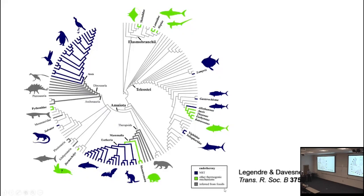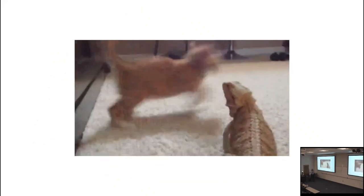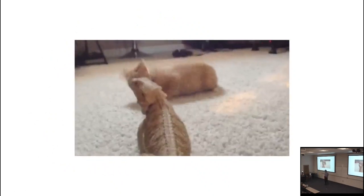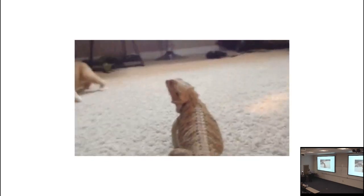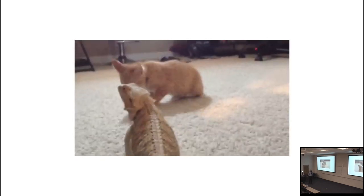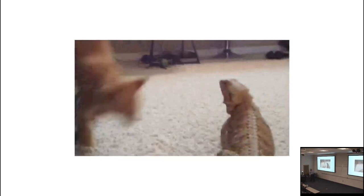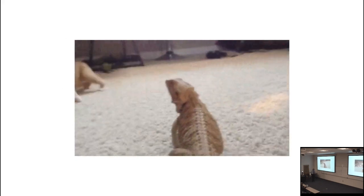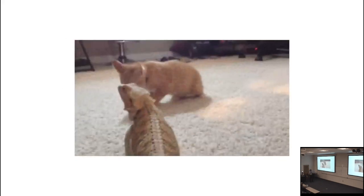Warm-blooded animals tend to be very active. Cold-blooded animals, a lot less so per unit time. We see warm-blooded animals active, dynamic, maybe a little on the crazy side there. In contrast, the cold-blooded animal is not as active.